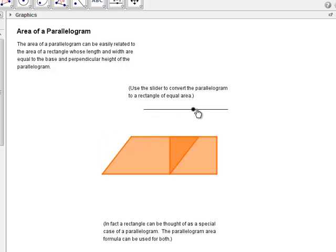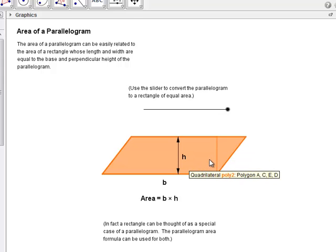And notice that any time you have a parallelogram, if you know the base and the height, you can convert this into a rectangle where you know the width and the length. So the length here is the same as the base of the parallelogram. The width of the rectangle is the same as the perpendicular height of the parallelogram. And so there we have the answer for parallelograms.